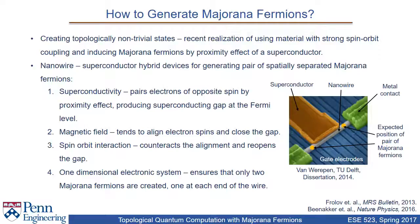Now that we have understood how to create topological superconductors, we can understand how Majorana fermions can be created. Recently, it has been realized that Majorana fermions can be induced in materials with strong spin-orbit interaction and in proximity of a superconductor. Nanowire-superconductor hybrid devices have been proposed. The figure on the right depicts such a system: the superconductor partially covers the nanowire, which is above gate electrodes and connected to metal contacts. The yellow dots show where Majorana fermions would be created. Induced superconductivity in the nanowire due to the proximity effect pairs electrons of opposite spin, producing a superconducting gap at the Fermi level.